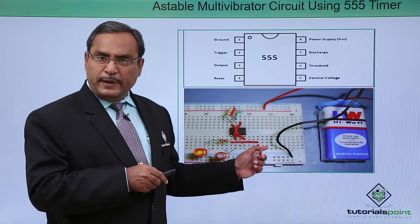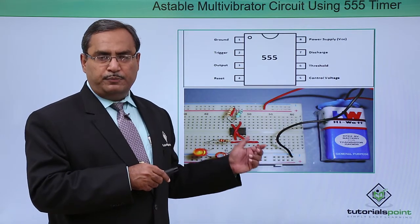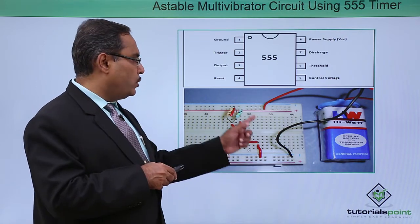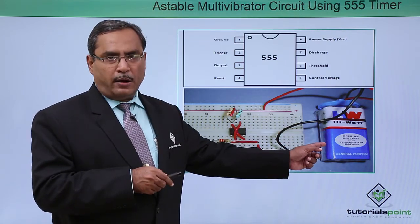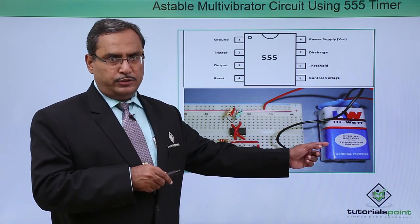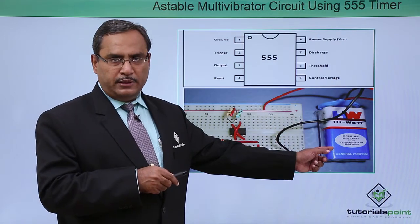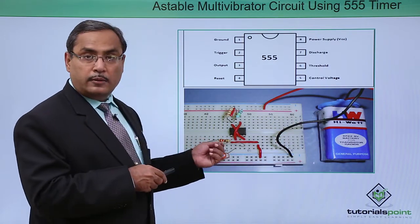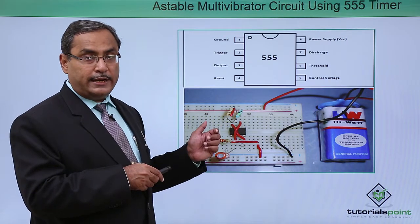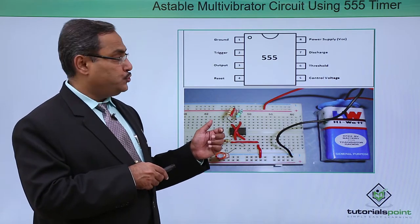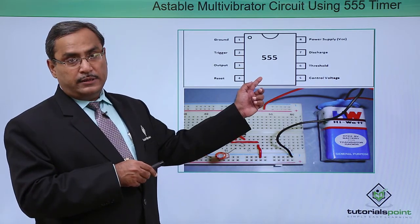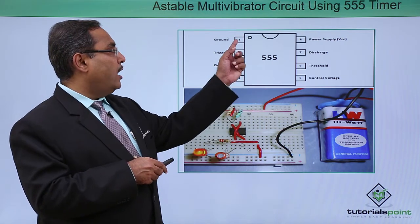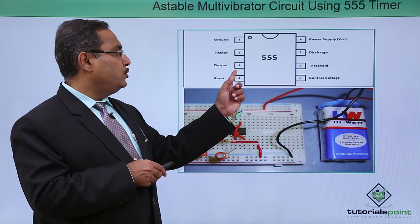If we build the circuit on a breadboard, it will look like this. We provide DC power through a battery, and the components are connected according to the circuit shown. The 555 timer pin-level diagram shows: ground, trigger, output, reset for pins 1 through 4.